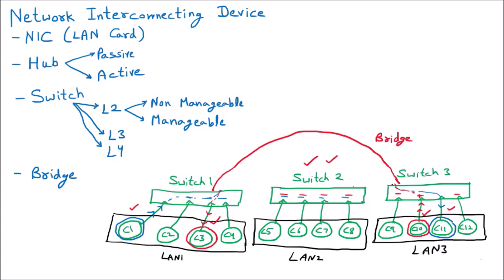If switch one wants to send data to switch two, the overbridge also has a connection with switch two, so we still have that freedom. We are replacing this concept with an actual device. This device has different ports — let us suppose three ports: one, two, and three. This device is the bridge. Bridge is a network interconnecting device, specifically a LAN device, with multiple ports.